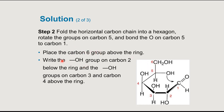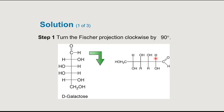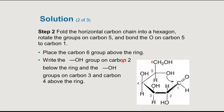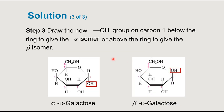Bond the oxygen on carbon 5 to carbon 1. In the Haworth projection, carbon 6 is above the ring. The hydroxyl on carbon 2 will be below, and the hydroxyl groups on carbons 3 and 4 will stay above. Carbon 2 is below the straight line so it stays below in the ring; carbons 3 and 4 are above the straight line so they're above the ring. Once we form the ring, carbon 6 and the hydroxyl flip positions so carbon 6 is above and the hydroxyl is at the three o'clock position.